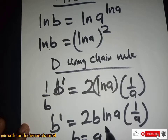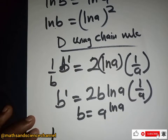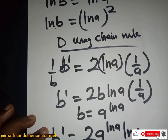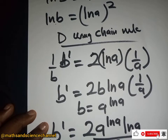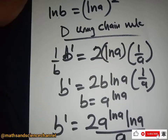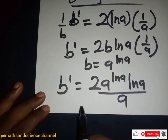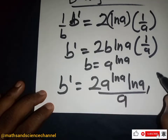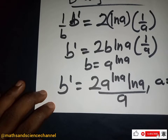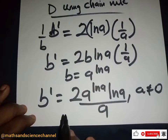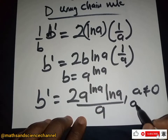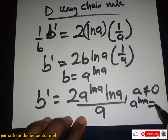Taking this to the other side, db equals 2 ln a times one over a times b. From the original equation b equals a ln a, substituting back gives db equal to a ln a times ln a divided by a, which simplifies. Now let's define this function and consider when a equals zero.